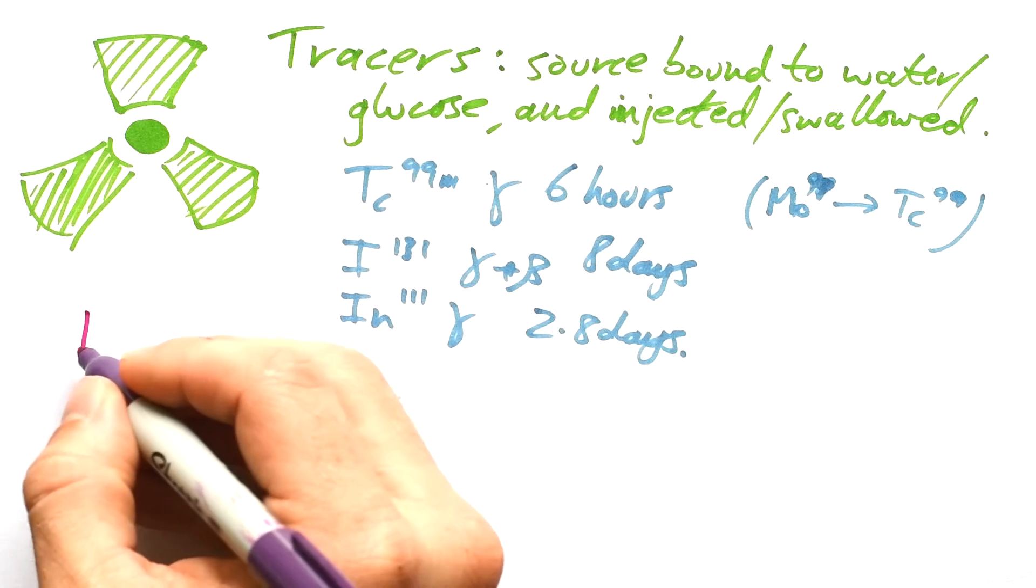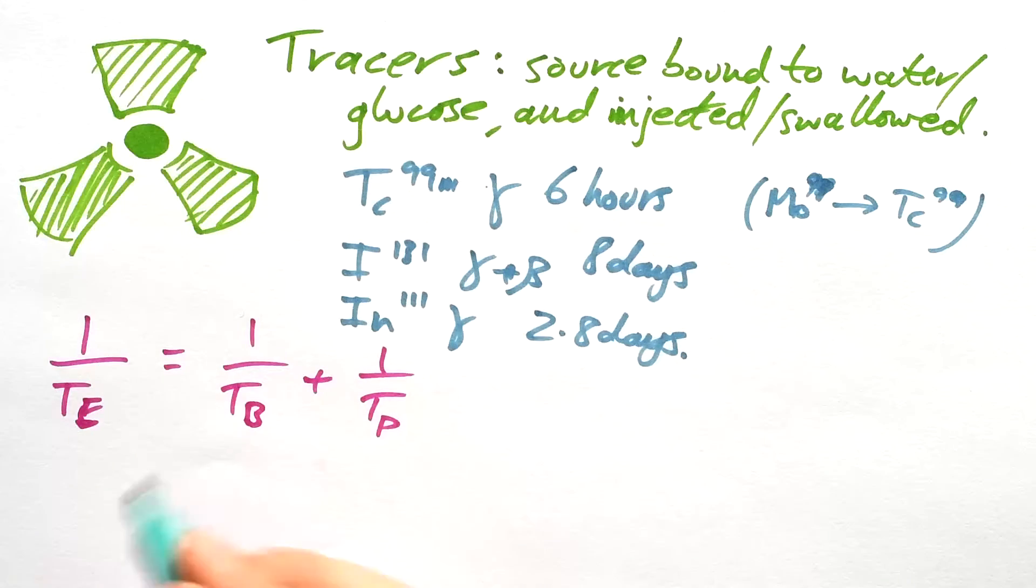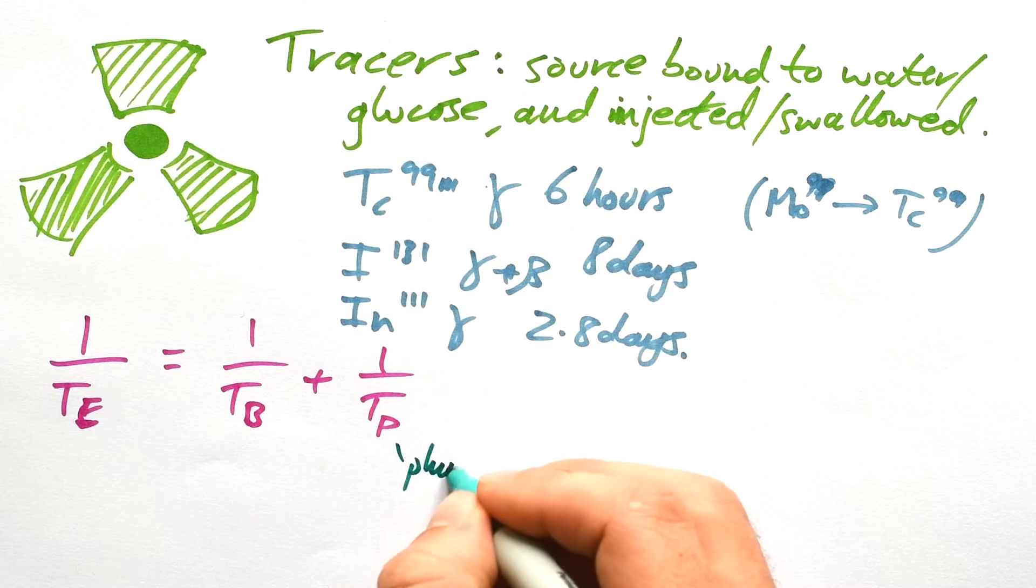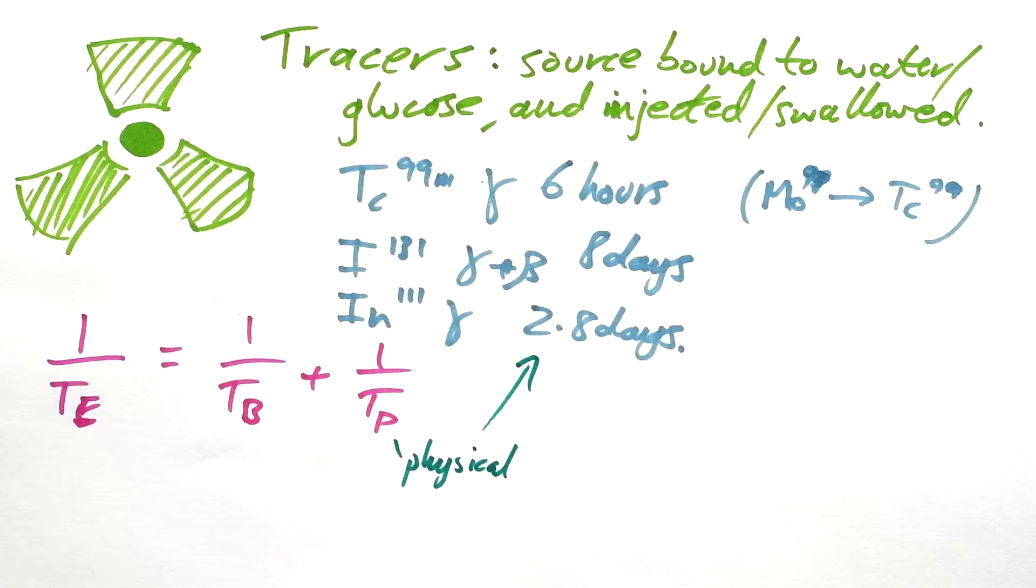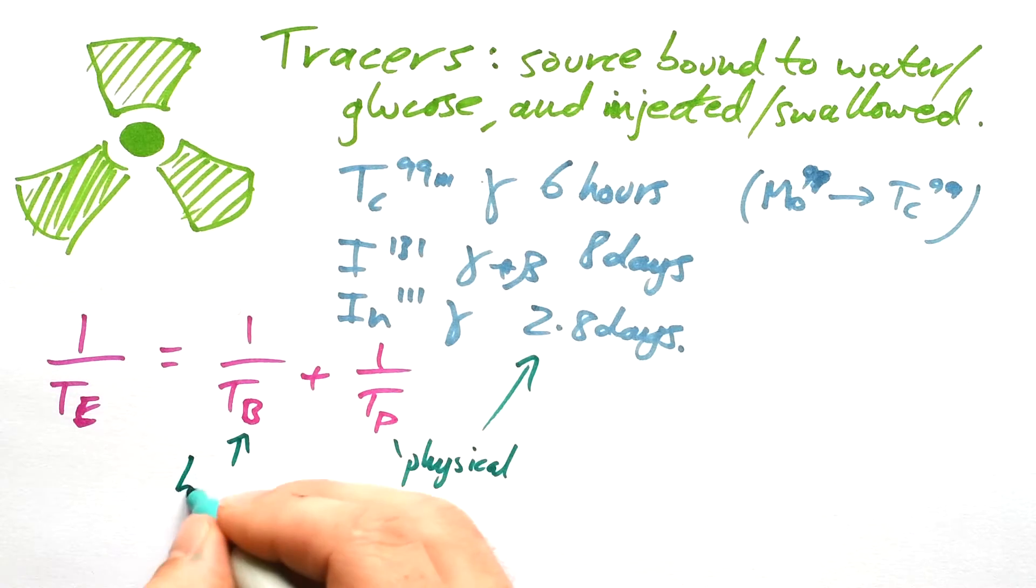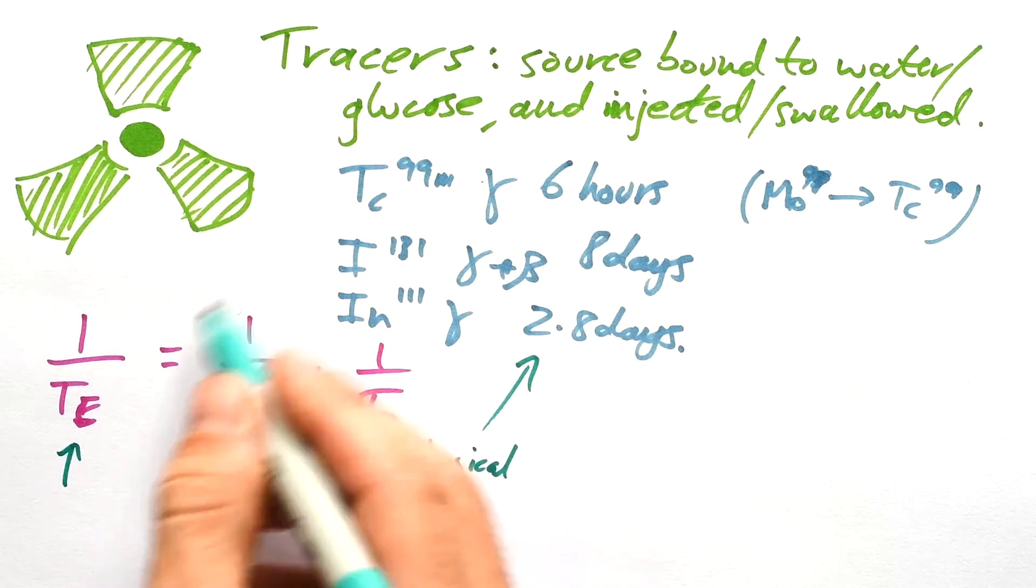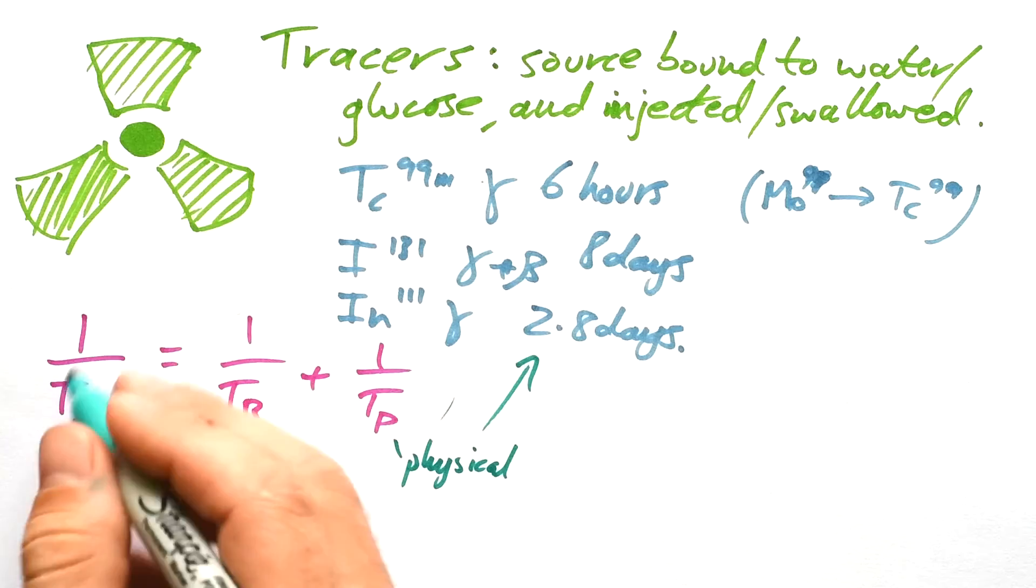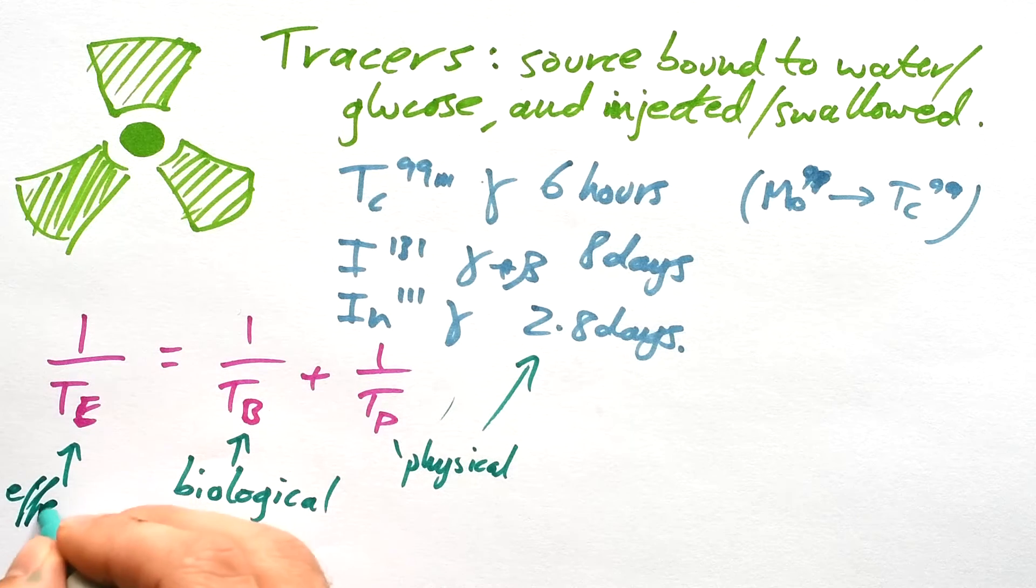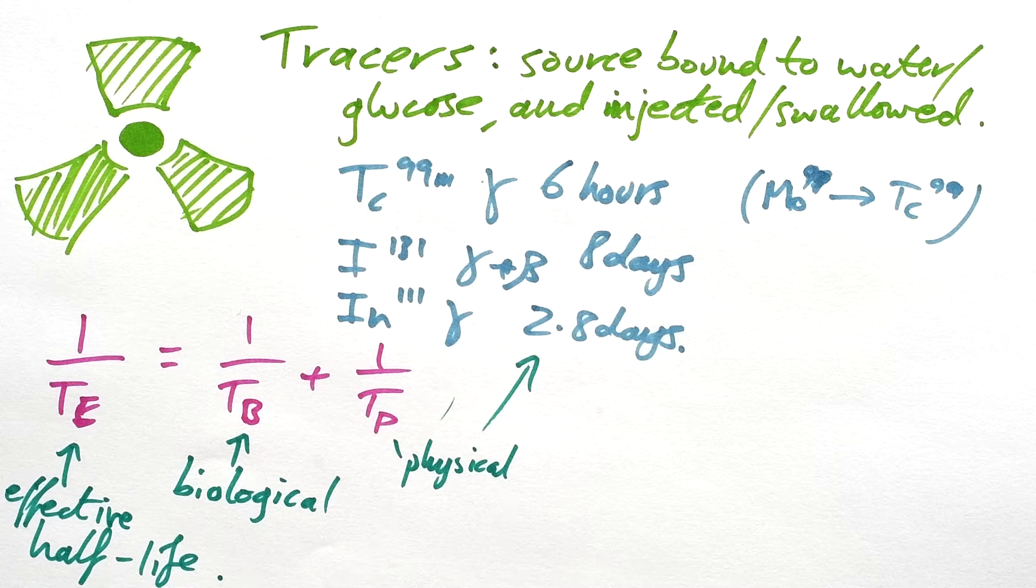These are all half-lives. Like we said, we have the physical half-life, that's these ones here. This is TB, the biological half-life. That's all to do with how quickly your body gets rid of it. And if we combine the reciprocals of those, we get one over the effective half-life. And so that one is the true indication of how the activity of an isotope is going to change in your body over time.